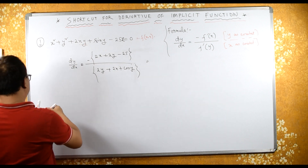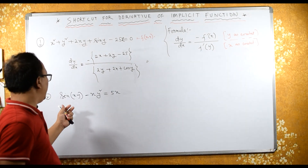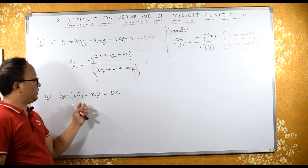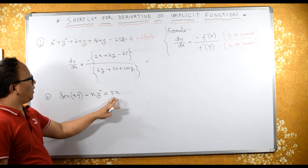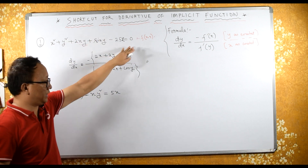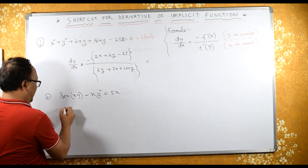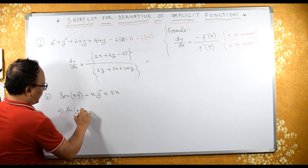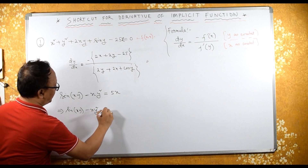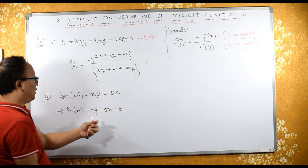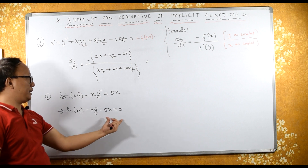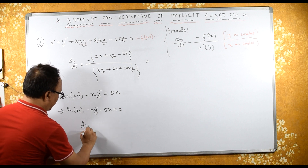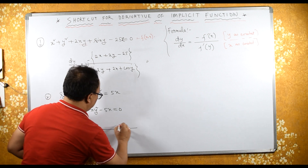Let us take another example — question number 2. This is an implicit function because it is a mix of x and y. In this question we already have equal to 0. We write it as: sin(xy) minus xy² minus 5x equals 0, because we need to make one side equal to 0. From here, dy/dx equals minus...